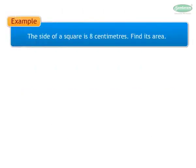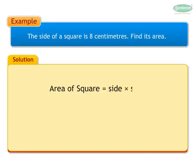Example: The side of a square is 8 centimeters. Find its area. Area of square is equal to side into side, equals 8 into 8, equals 64 square centimeters.